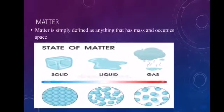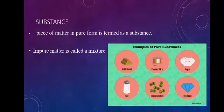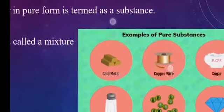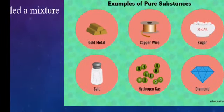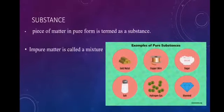What is a substance? A piece of matter in pure form is termed as a substance. Examples of substances are gold metal, copper wire, sugar, salt, hydrogen gas, and diamond. What is a mixture? Impure matter is called a mixture, like sand and iron pieces in the mixture. This is impure matter.